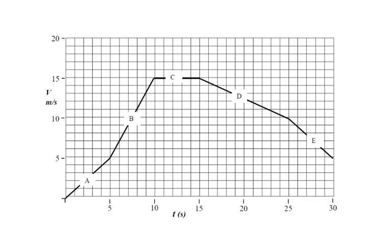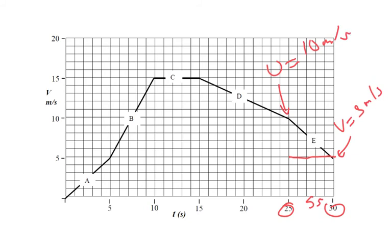Finally, section E goes from 25 to 30 seconds, taking 5 seconds. The final velocity v is 5 m/s and the initial velocity u is 10 m/s. So 5 minus 10 divided by 5 gives minus 5 divided by 5, which equals minus 1 meter per second squared — another deceleration.